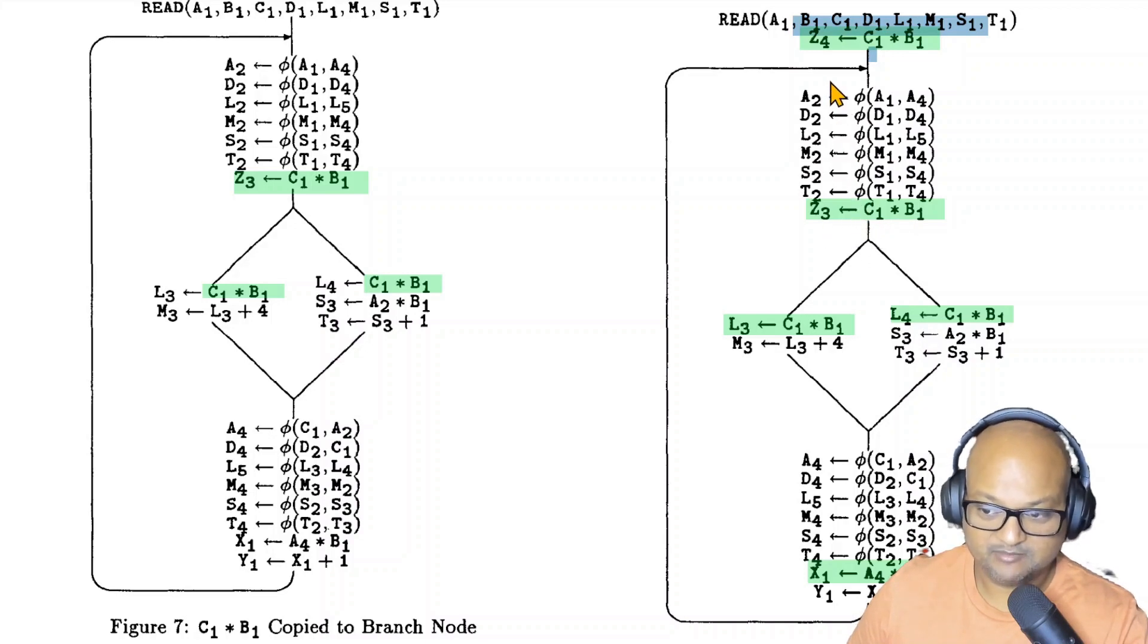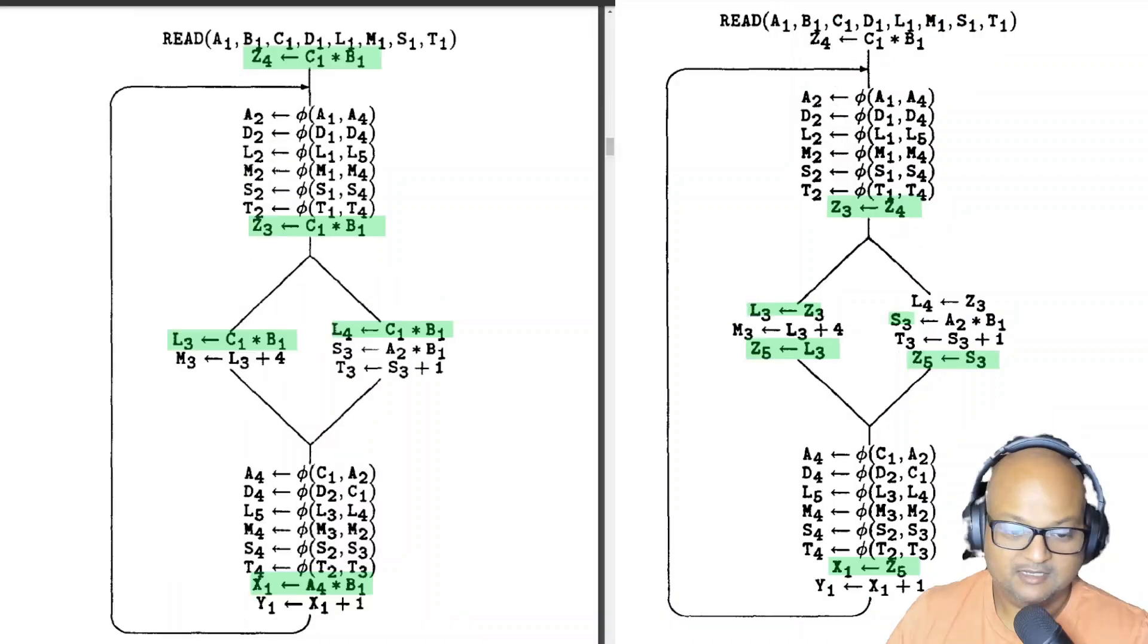We can also copy the computation c1 into b1 out to just before the if statement to the loop header. And we can do this because this computation is identical on both branches. And then you take the next step and note that the computation c1 into b1 doesn't even need to be inside the loop because it is not dependent on any value changing while it is inside the loop.